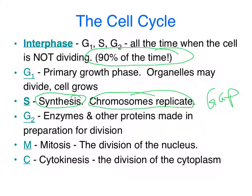Then the G2 phase, or GAP2, is when the cell gets serious about getting ready for cellular division. At this point, enzymes and other types of proteins that are necessary for cell division to take place kick into production. From interphase, the cell will then move into the mitotic stage — mitosis — where division will take place.